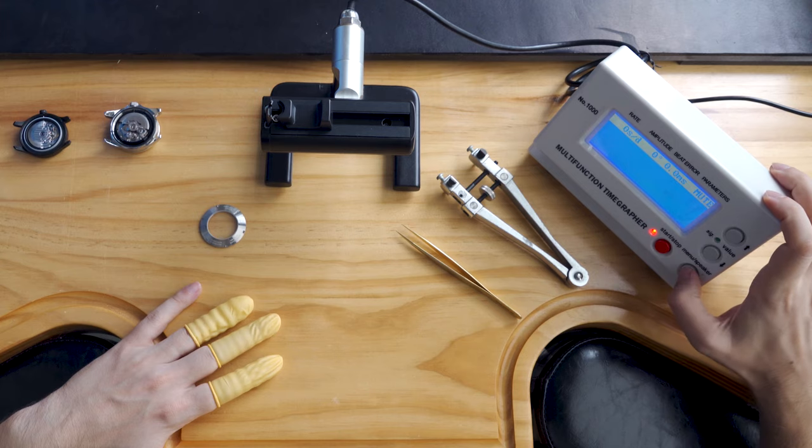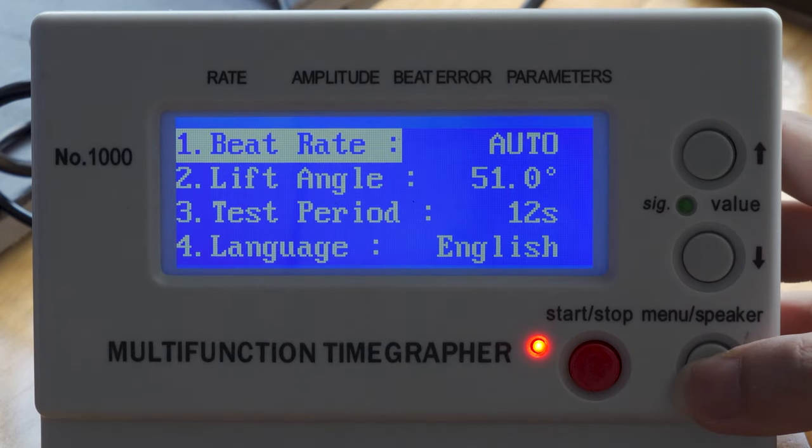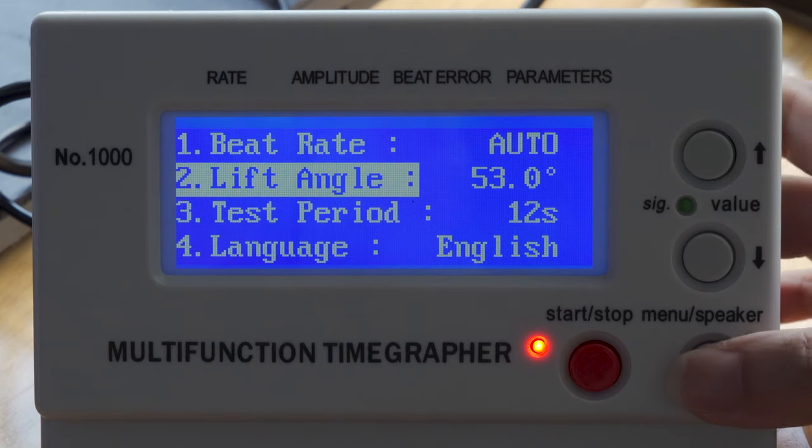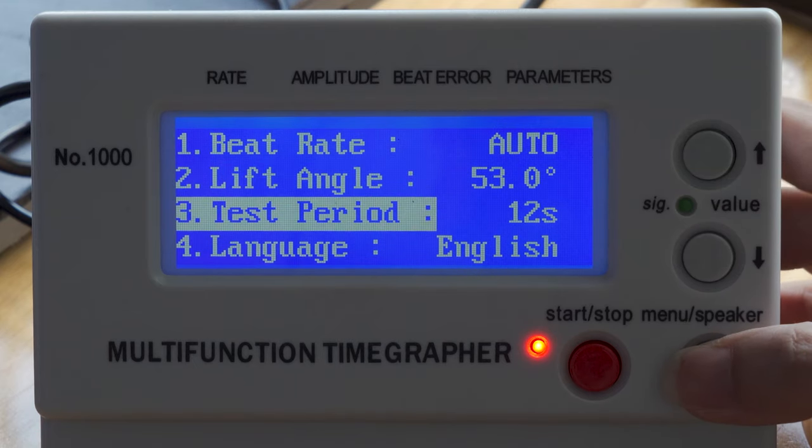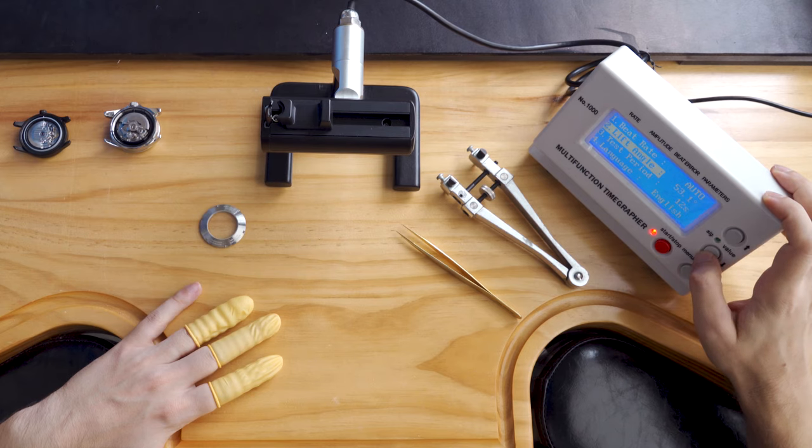Before using a time grapher, set the lift angle of your movement in the settings. This is a movement specific number that is used to calculate the amplitude of a movement. For example, the Seiko NH35 here has a lift angle of 53 degrees. We've included the lift angle of a few popular movements in the description below.